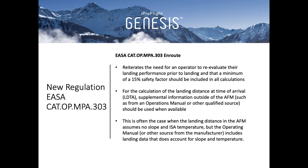The other change is there is a new regulation, CAT.OP.MPA.303. This new regulation reiterates the need for an operator to reevaluate their landing performance prior to landing, and that a minimum of a 15% safety factor should be included in all calculations. After reading the new regulation, it indicates to APG that for the calculation of the landing distance at time of arrival, supplemental information outside of the AFM — such as from an operations manual or other qualified source — should be used when available. This is often the case when the landing distance in the AFM assumes no slope and ISA temperature, but the operating manual or other source from the manufacturer includes landing data that does account for slope and temperature.